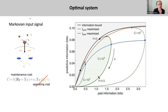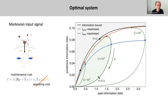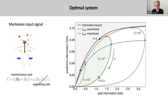More concretely, we have recently looked at a Markovian input signal. Here in black you see the information bound — the predictive information as set by the past information — which is determined by the temporal statistics of this Markovian signal. Highlighted in green is the region that is accessible to this push-pull network under a resource cost C, given simply by the number of receptors and the number of readout molecules times the growth rate.